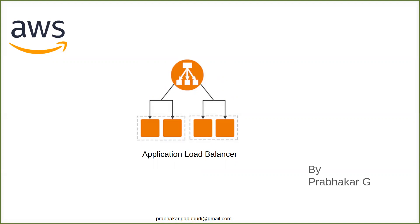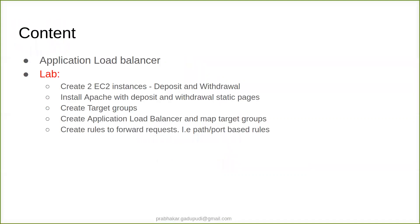This is a follow-up session for my previous session. In this session we are going to talk about Application Load Balancer. We will check in the lab how to create two instances and install Apache on two instances — one for deposit and one for withdrawal — with static pages, and create target groups, create an Application Load Balancer, map the target groups, and create rules to forward HTTP requests. This request could be path-based or port-based.